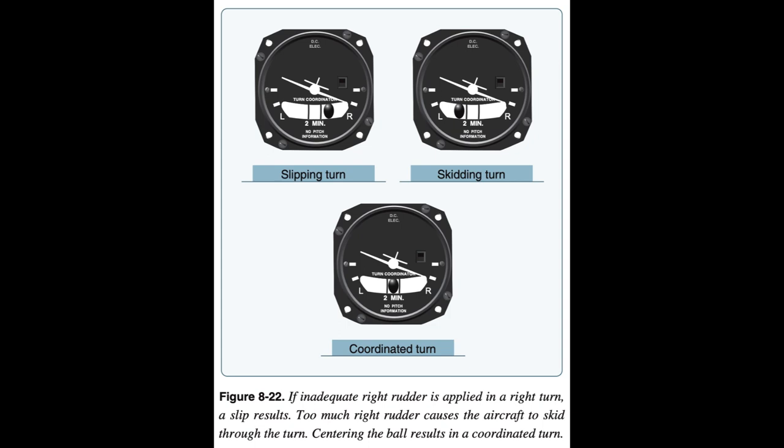In a slip, the rate of turn is too slow for the angle of bank, and the ball moves to the inside of the turn. In a skid, the rate of turn is too great for the angle of bank, and the ball moves to the outside of the turn. To correct for these conditions and improve the quality of the turn, remember to step on the ball. Varying the angle of bank can also help restore coordinated flight. To correct for a slip, decrease bank and/or increase the rate of turn. To correct for a skid, increase the bank and/or decrease the rate of turn.